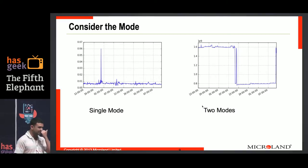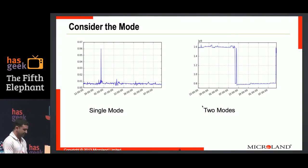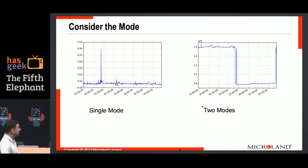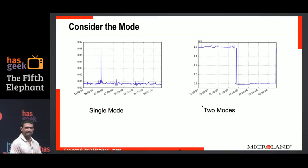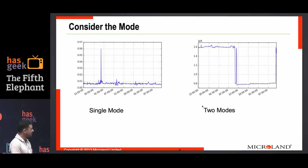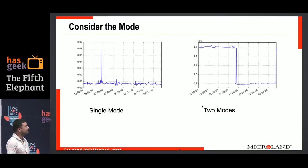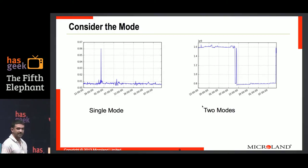The mode is the most frequently occurring value in a sample. If you look at the graph on the left, the mode is around 0.08. For continuous data, it's not a single value — it's a small interval. You can see that most of the values of this graph are in this little interval, so this particular graph has a single mode. The graph on the right, on the other hand, has two modes: one up here at 1.6 billion, and one at 800 million.